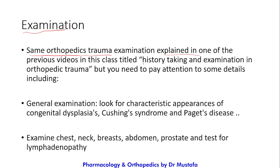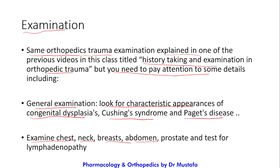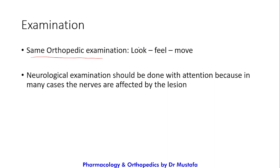Examination follows the same orthopedic trauma examination format. For general examination, look for characteristic appearances of congenital dysplasias, Cushing's syndrome, and Paget's disease. Examine the chest, neck, breasts, abdomen, and prostate, and test for lymphadenopathy, looking for primary tumors. Perform the standard orthopedic examination - look, feel, and move - and also conduct a careful neurological examination, as the nerves are often affected by the lesion.